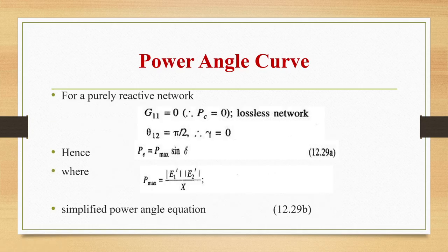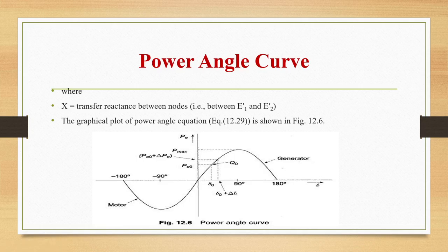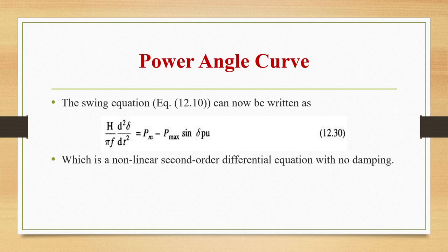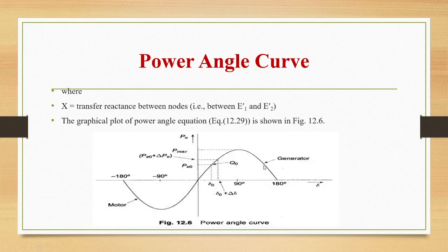The swing equation thus becomes (H/πf)·d²δ/dt² = Pm − Pmax·sin(δ) per unit, which is a nonlinear second-order differential equation with no damping. The power angle curve plots Pe on the y-axis versus δ on the x-axis. For a generator, the curve is in the positive region; for a motor, in the negative region. Key operating points such as Pe0, δ0, and δ0 + Δδ are identified on the curve.